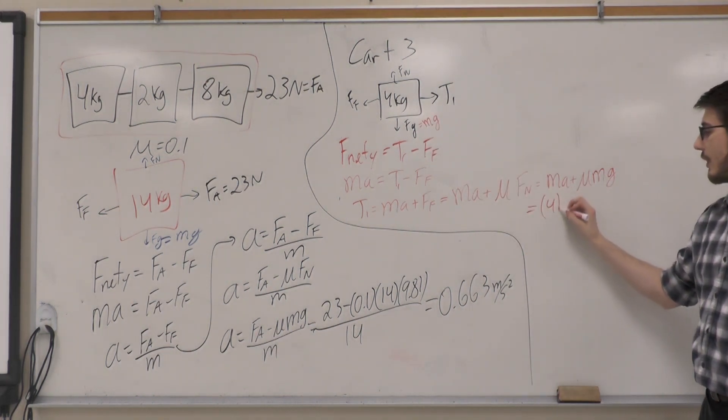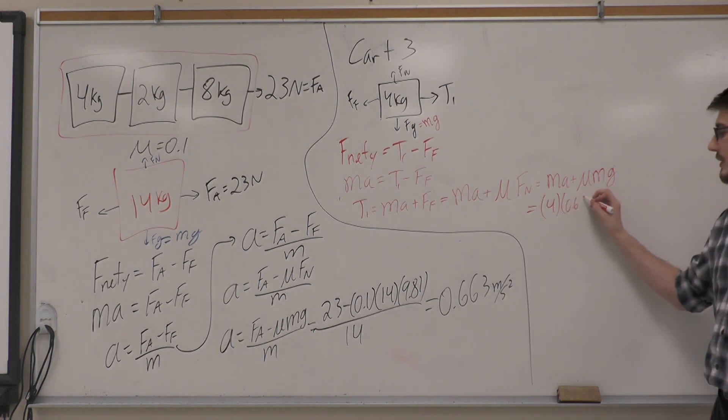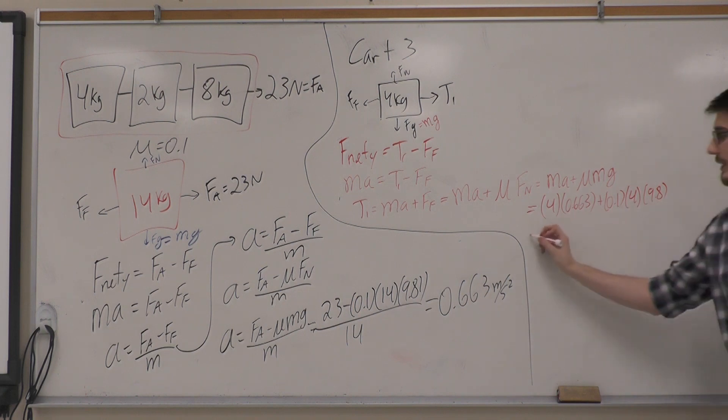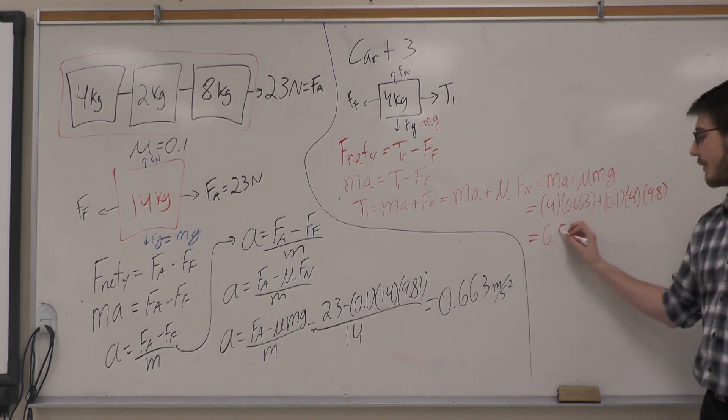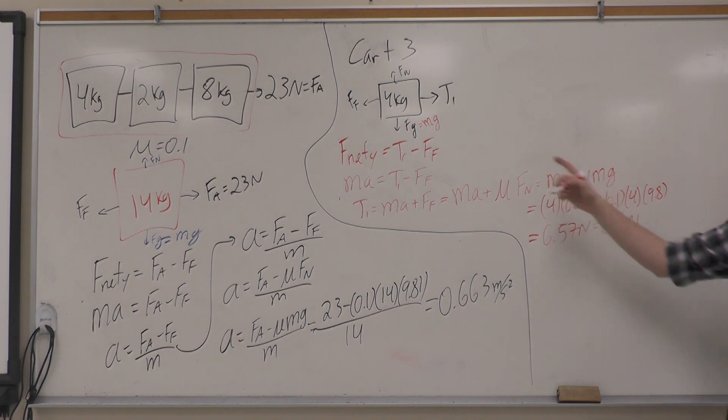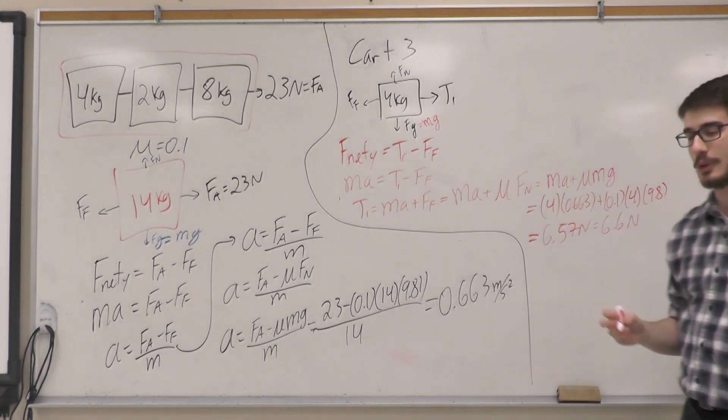We can plug our numbers into this question to get our result. The mass of the cart is 4, the acceleration of the entire system is 0.663, mu is 0.1. Solving for these numbers, we'll get that the answer is 6.57 newtons or 6.6 newtons as our tension one present in the very back cart.